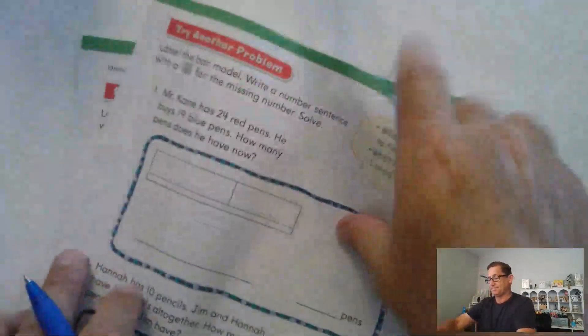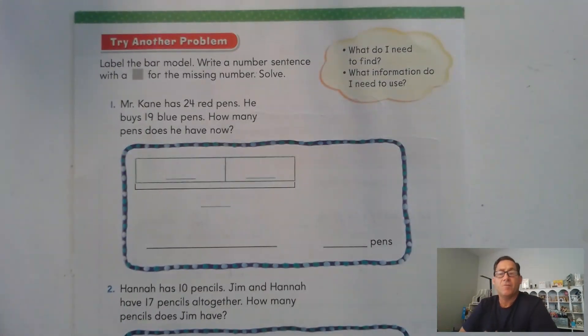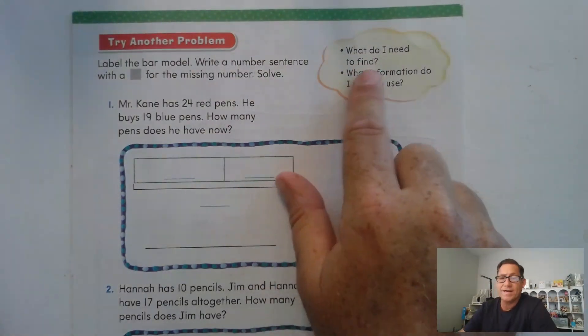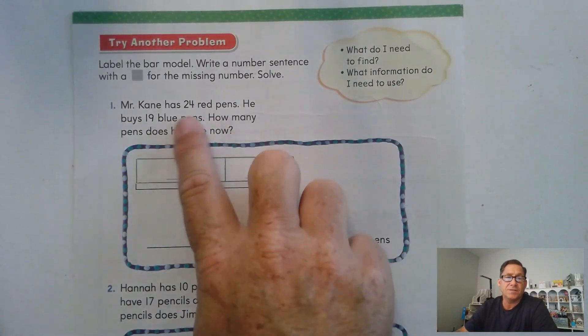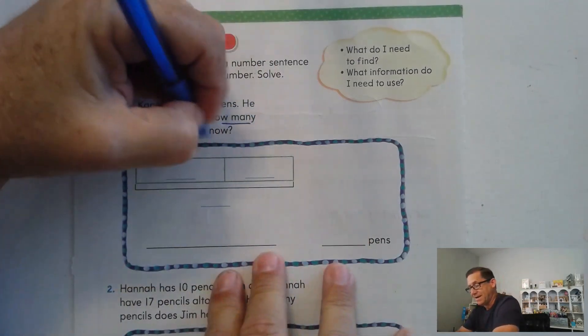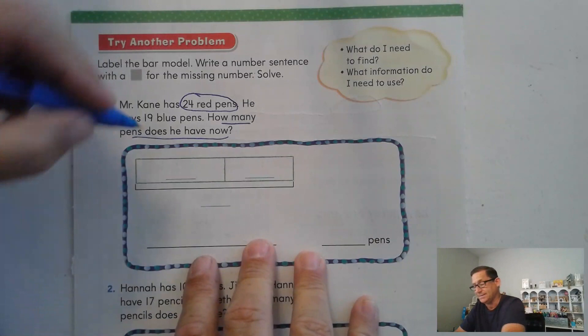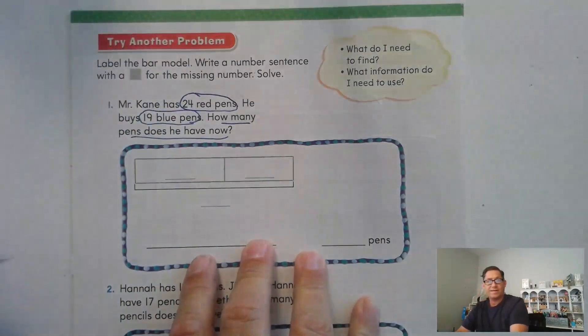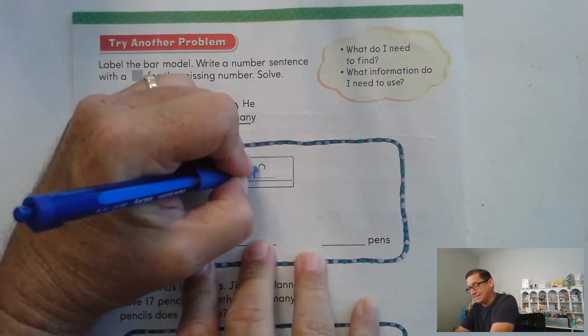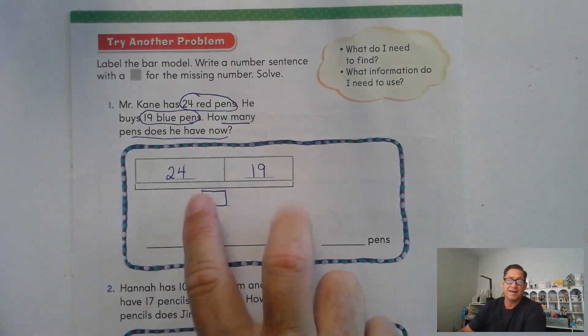Let's look at page 206. Label the bar model and write a number sentence with a square for the missing number and then solve. Keep in mind, what do I need to find and what information do I need to use? Mr. Kane has 24 red pens. He buys 19 blue pens. How many pens does he have now? So we need to find out how many pens he has now after buying the 19 blue pens. So we need 24 and 19. And this is what we need to find. Combined will tell us this missing number.